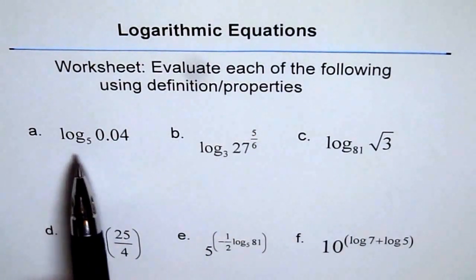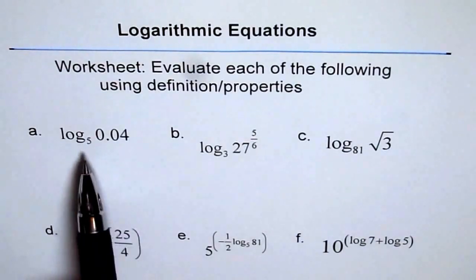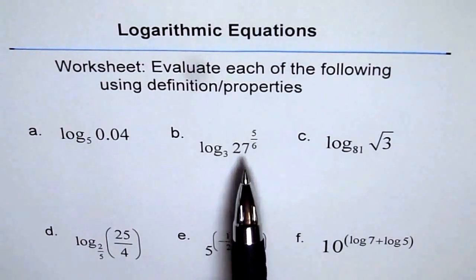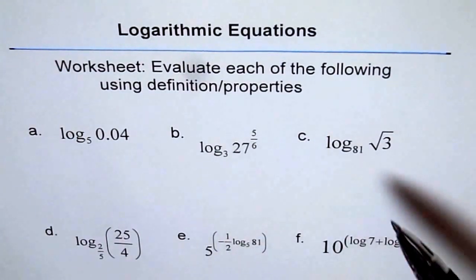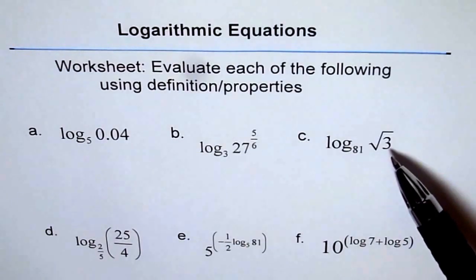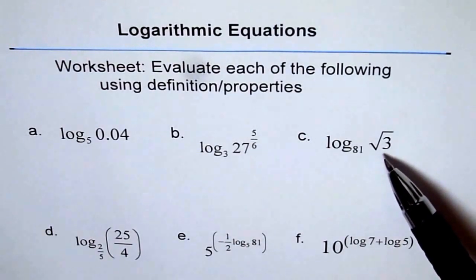The first question is log to the base 5 of 0.04, log to the base 3 of 27 to the power of 5 over 6, log of 81 base 81 and the argument is square root of 3.